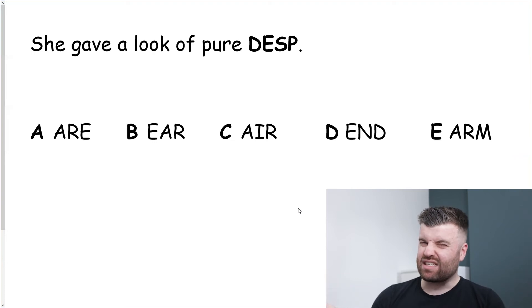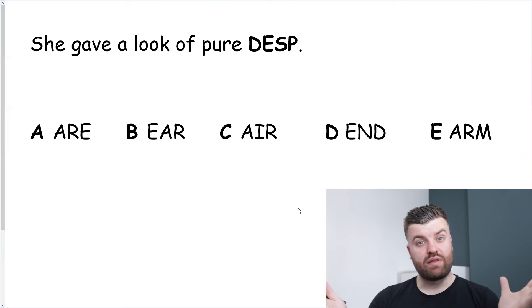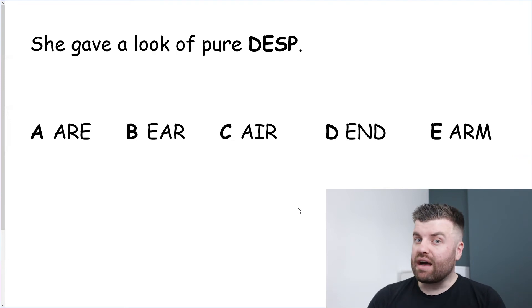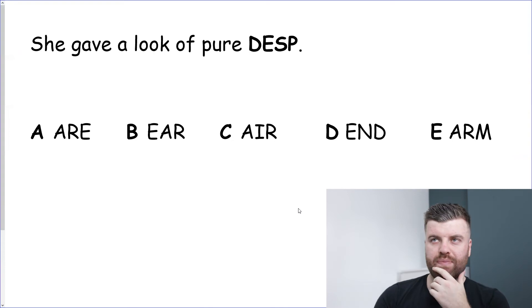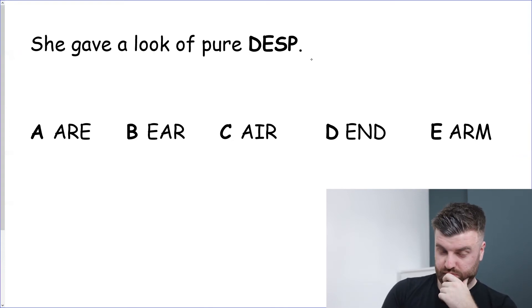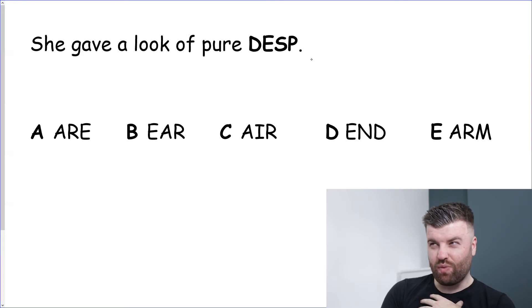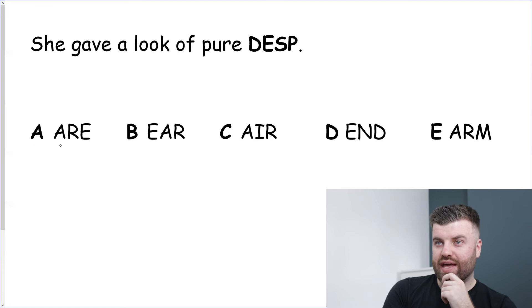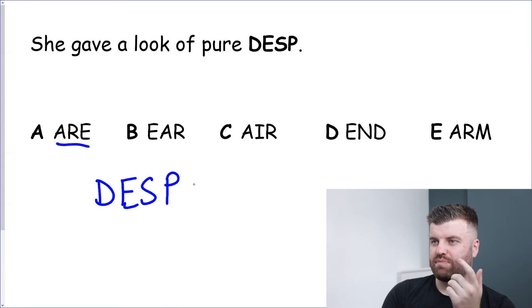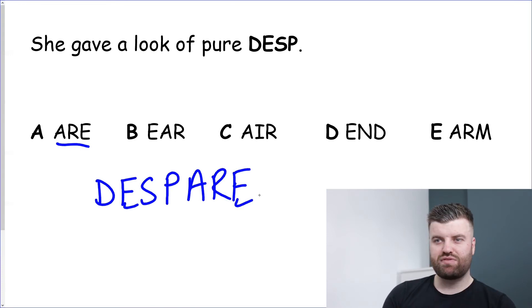One more question and we're basically experts. Remember: three letters can go anywhere — start, end, or middle — and watch out for tricky sound spellings that change. 'She gave a look of pure DESP.' I think I know this one — despair. Option A is ARE: putting it at the end gives DESPA-R-E — desk air. We've solved it! She gave a look of pure despair.